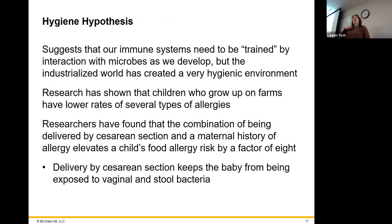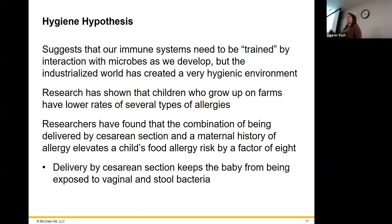The idea is that our immune system needs to be trained by interaction with microbes as we develop — either through vaccination or by seeing these things as we're growing up. Without that training, being exposed to certain things, it's like our body didn't get told which things are bad in the IgE arena, because we don't have worms and parasites. So we didn't get trained properly.